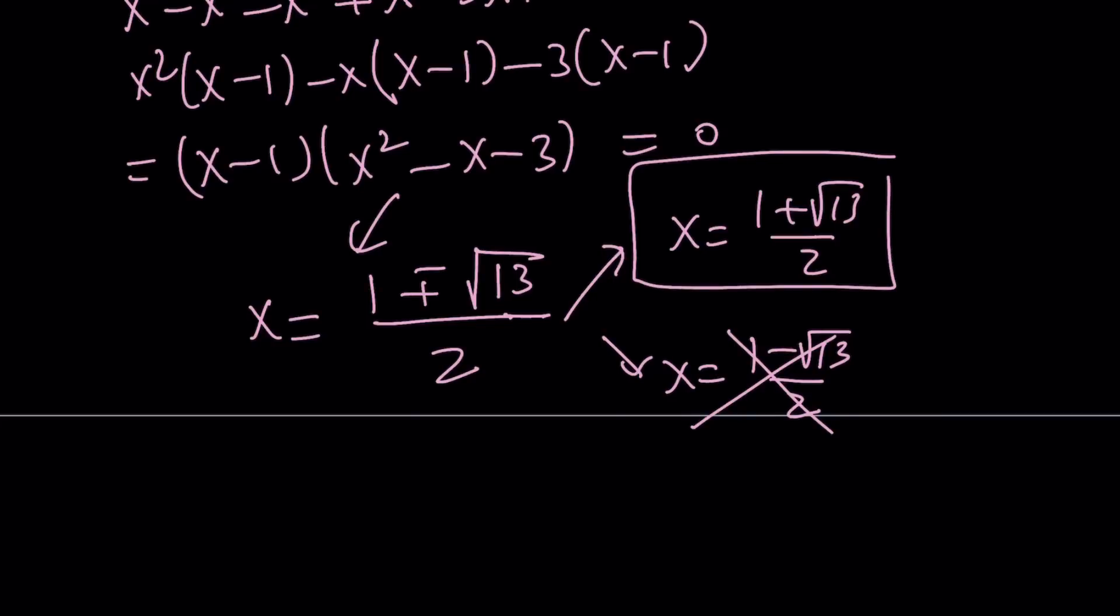One of the solutions is not good because when you plug it in, it's not going to work. So you can call that an extraneous solution, whatever you want. But the only one that works from here is going to be x equals 1 plus root 13 over 2. Radical, but good. What about x equals 1? We said that x equals 1 is a solution. Guess what? That is also an extraneous solution.